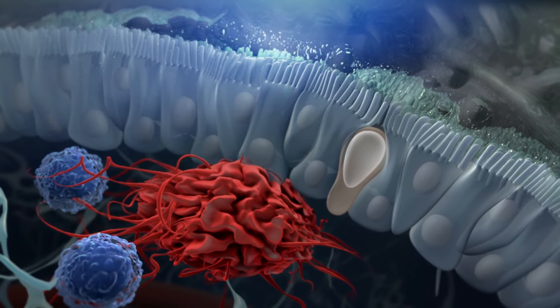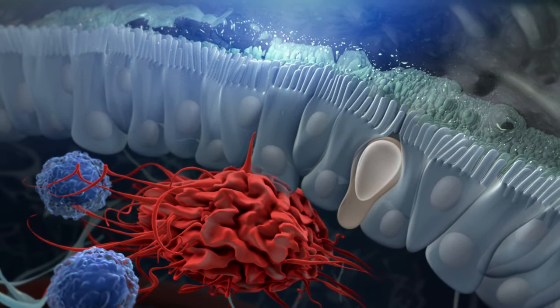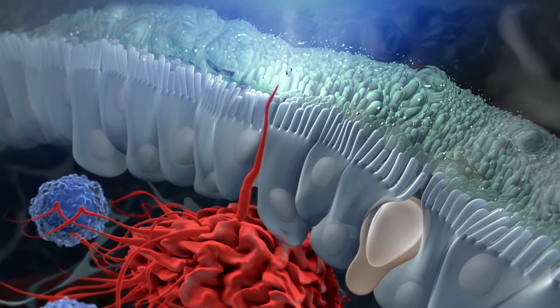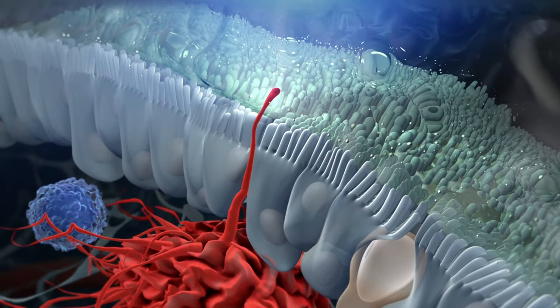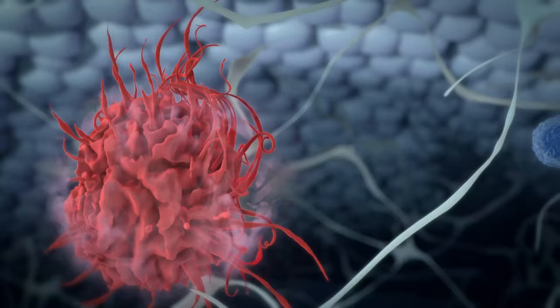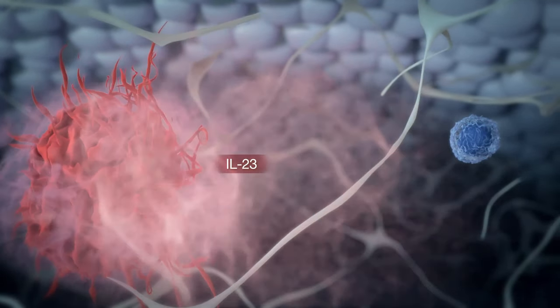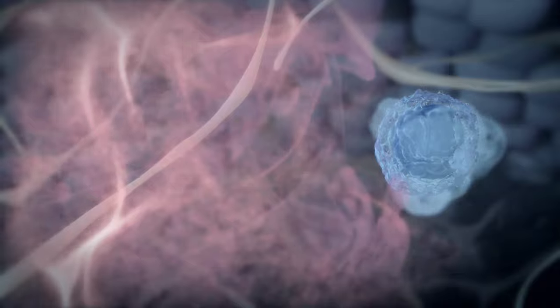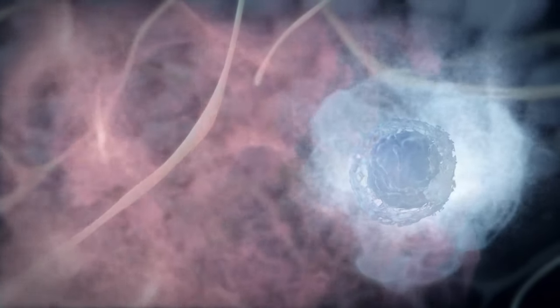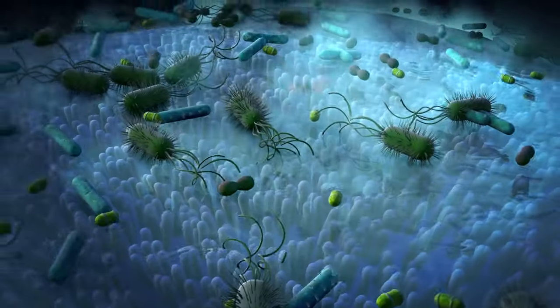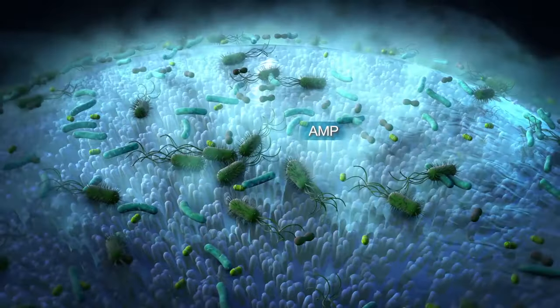ILC3s interact with dendritic cells to maintain the epithelial barrier. Dendritic cells, which are specialised in the presentation of antigen, acquire antigen from the gut microbiota and secrete interleukin-23. IL-23 stimulates the ILC3s to make IL-22, which then activates the epithelium to secrete antimicrobial peptides, or AMPs, that kill bacteria directly.